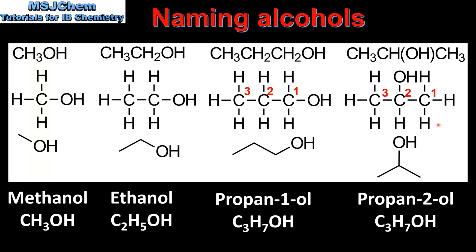Note that we always assign the lowest possible number to the carbon atom which is bonded to the hydroxyl group. So propan-3-ol does not exist — instead it is named propan-1-ol. Propan-1-ol and propan-2-ol are structural isomers. They have the same molecular formula, C3H7OH, but the hydroxyl group is bonded to a different carbon atom, which means they have different structural formulas.